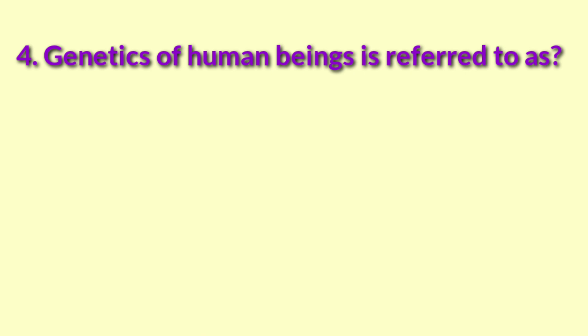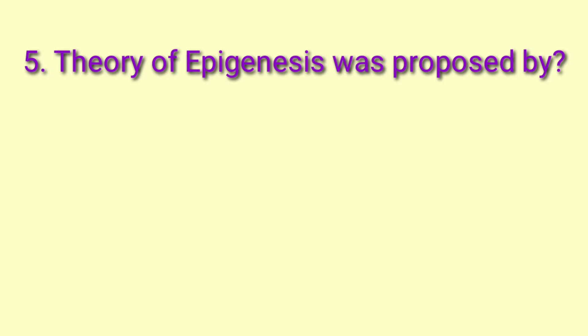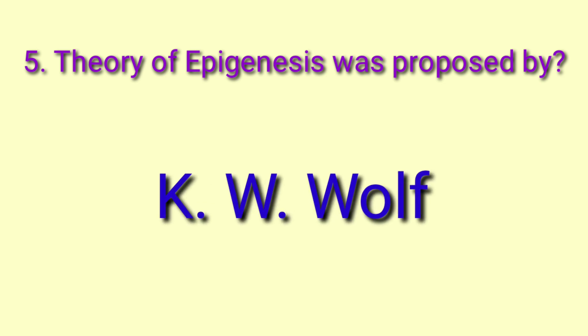Genetics of human beings is referred to as eugenics. The theory of epigenesis was proposed by K.W. Wolf.